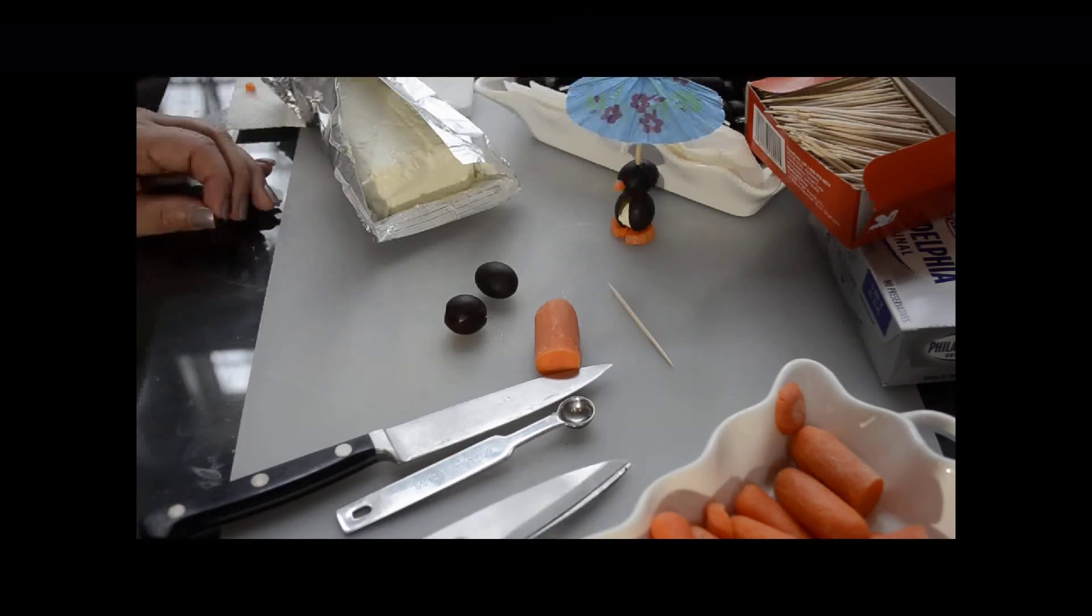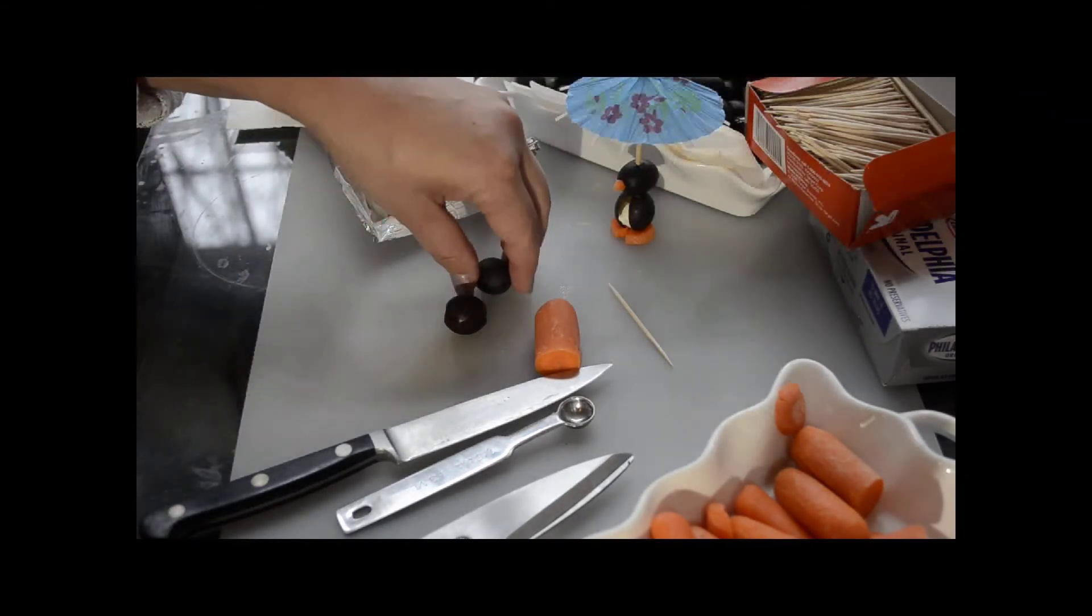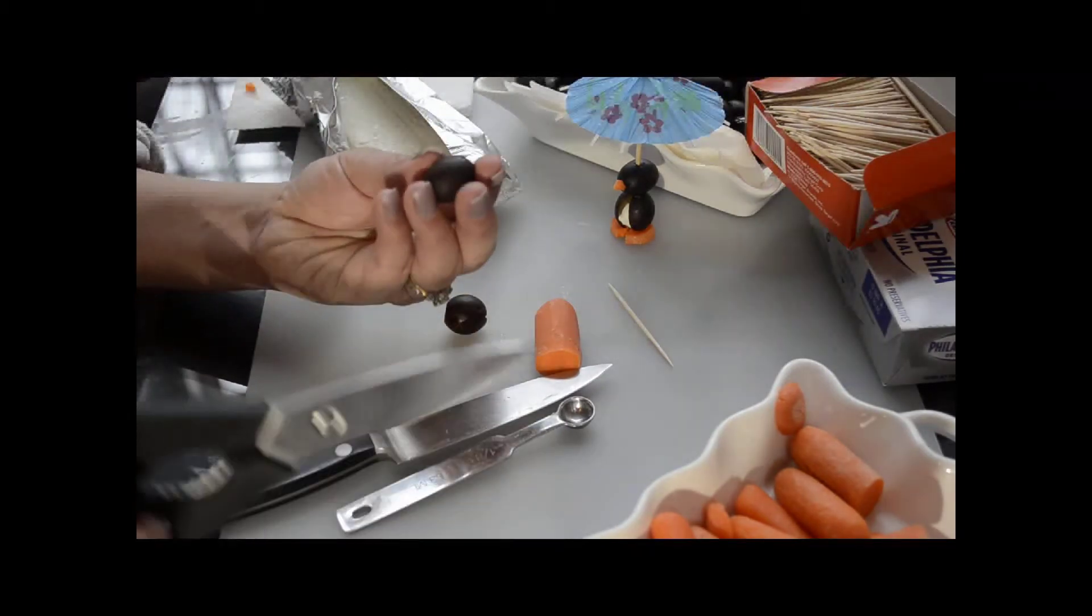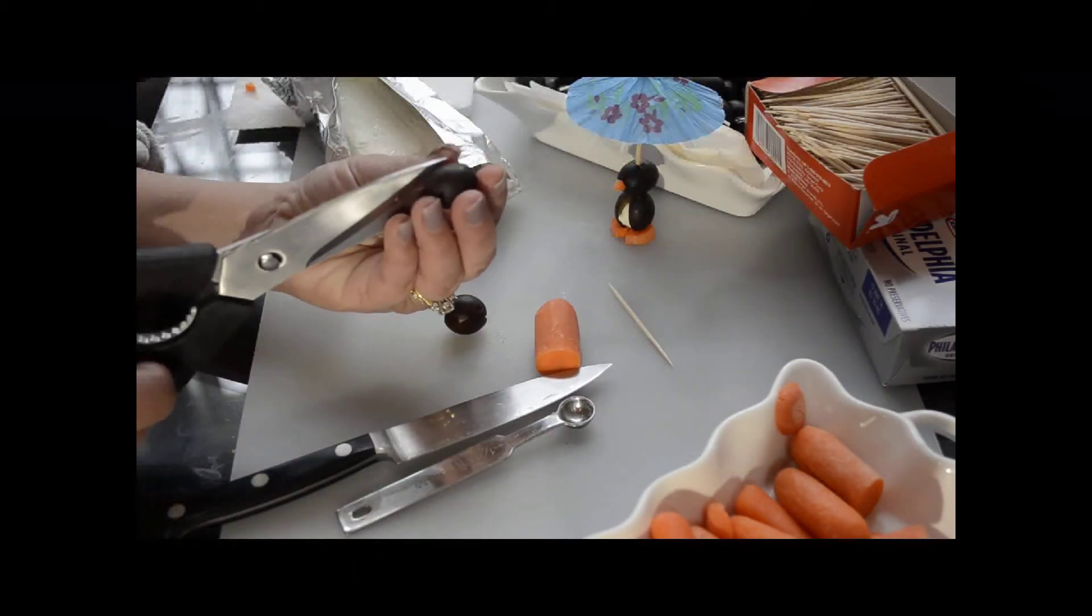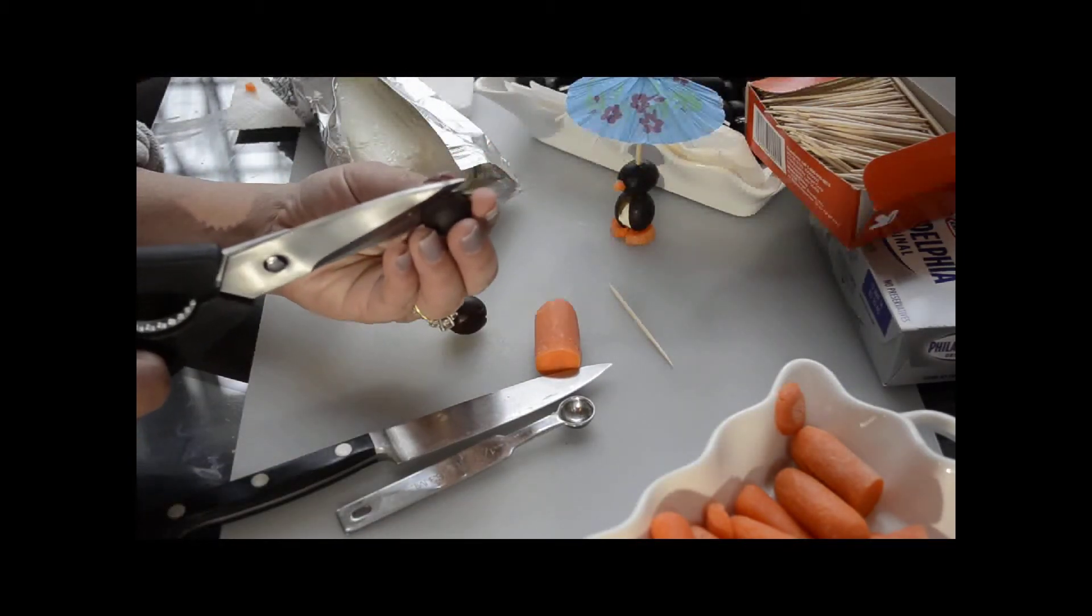Drain your olives in a colander and put it on paper towels. Then choose two firm olives and cut the first one down the center.